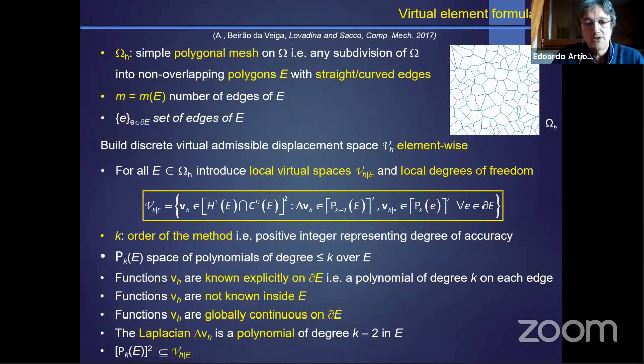And are a polynomial of degree K over the element boundary. That is all we know about our virtual element functions. So the idea is that for functions VH, they're totally known explicitly on the element boundary, they're fully implicit, meaning not known inside the element, and they are globally continuous over the element boundary.